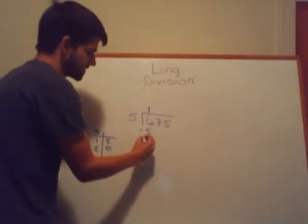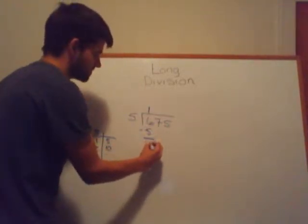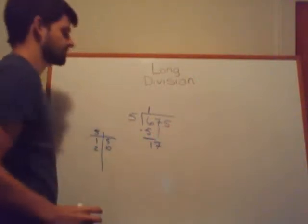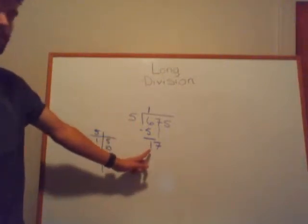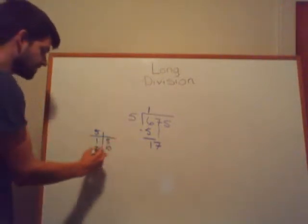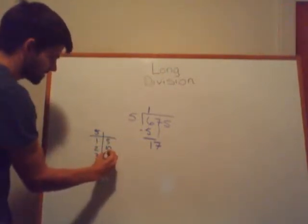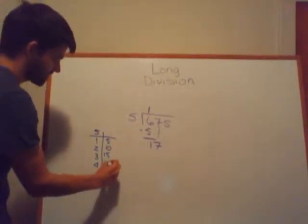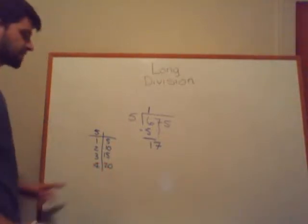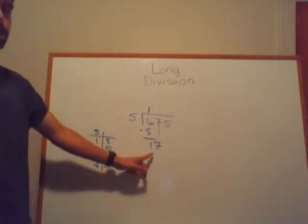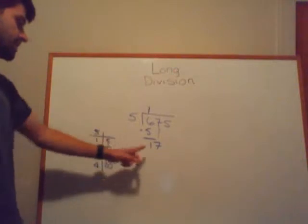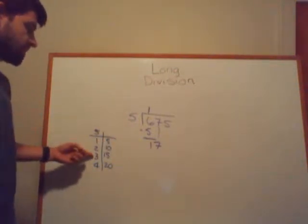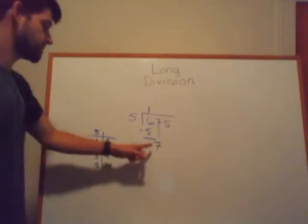Now go ahead and subtract: 6 minus 5 is 1. Bring down the next number. Now we're trying to figure out how many times 5 goes into 17. Continuing our multiplication tables: 3×5=15, 4×5=20. I can stop here because 20 is greater than 17, which means 5 can't go into 17 four times. But it can go in 3 times because 5×3=15.